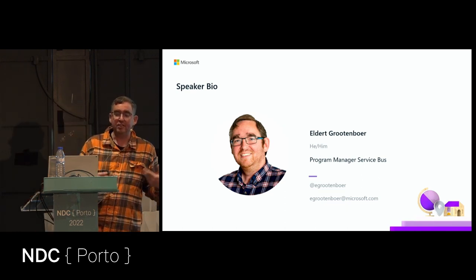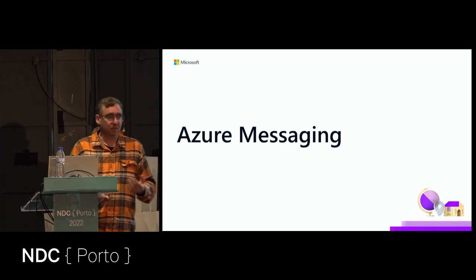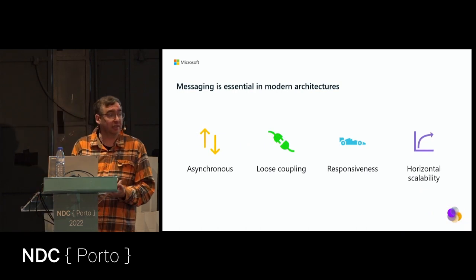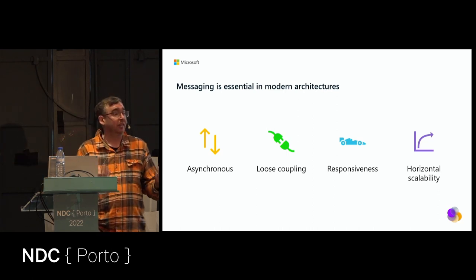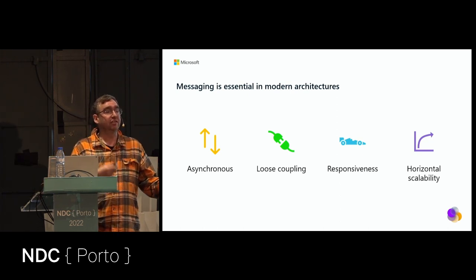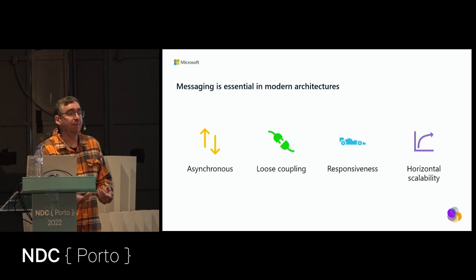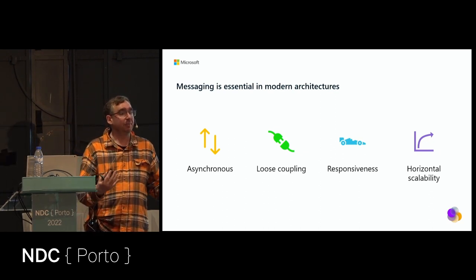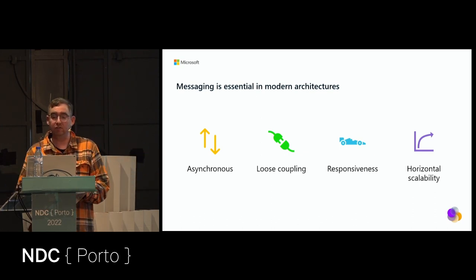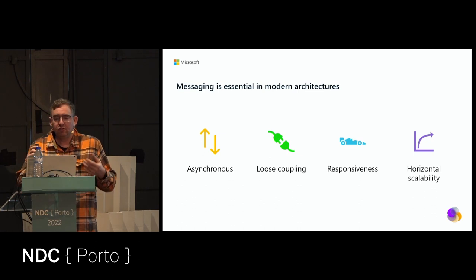Let's have a look at what Azure messaging actually is. Why do we use messaging services? Because messaging is essential in modern architectures. Messaging allows us to work asynchronously — our sender and receiver are decoupled, so the sender doesn't need to know about the receiver and they can work independently. It's about responsiveness and scalability: if I have many senders and my receiver can't keep up, I can just place messages in the queue.